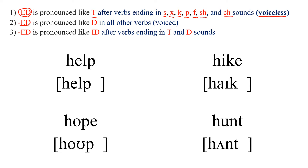ED is pronounced like D in all other verbs — they are called voiced. Third, ED is pronounced like IT after verbs ending in T and D sounds.